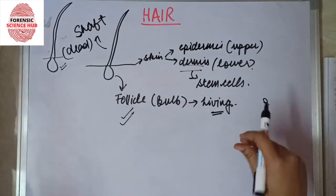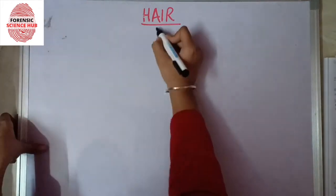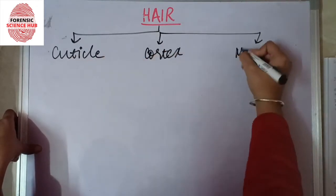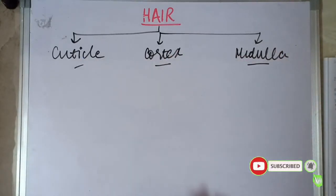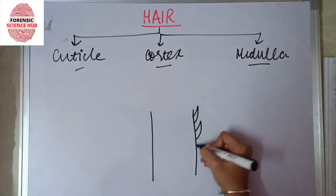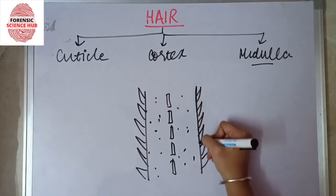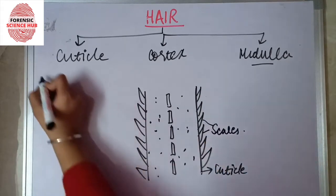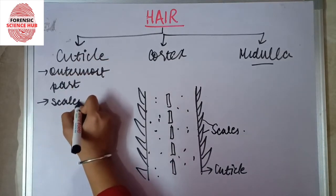Once the life of an older follicle is complete, a new follicle comes and takes its place. Now I'll talk about the three main layers of the hair. Our hair consists of: first, cuticle; next, cortex; and last but not the least, medulla. Let me draw a small diagram to illustrate. The outermost layer you can see is the cuticle, and on it are the scales.